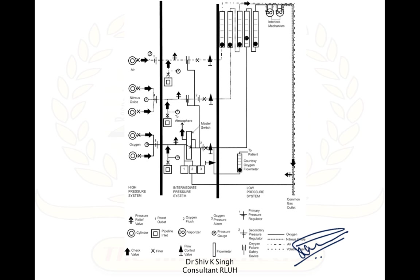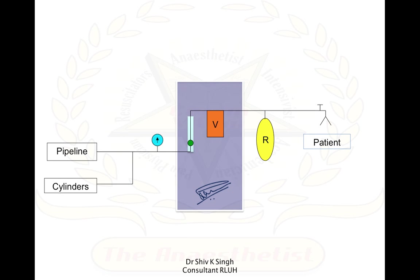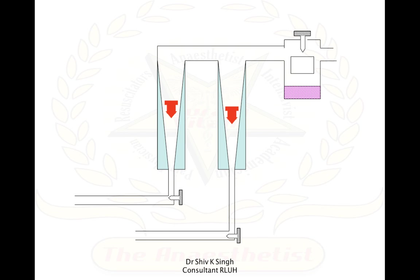If you look at the machine, it looks very complex but in real sense it is actually very simple. We have a delivery system like pipelines or cylinders, then flow meters to control the flows and vaporizers to deliver the anesthetic. The interface between the machine and the patient is the anesthesia circuit, and ultimately it is the flows that pass through the vaporizers which carry the anesthetic gases that keep the patient asleep. Machines are very important for delivery of oxygen and anesthesia gases.